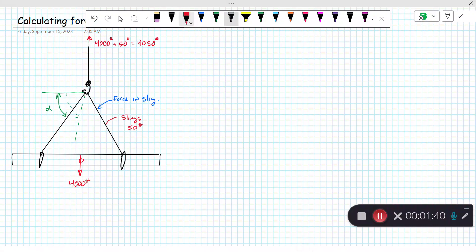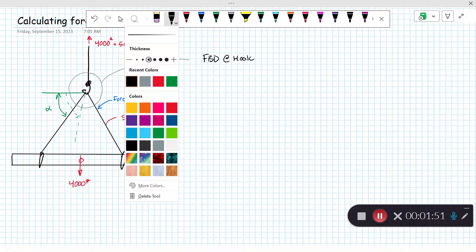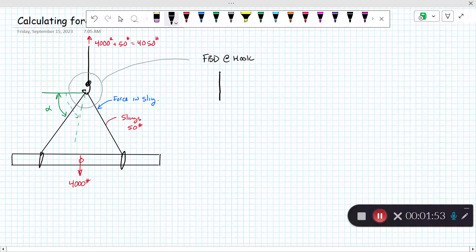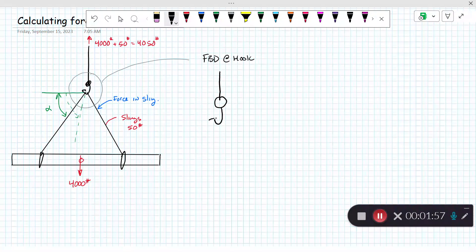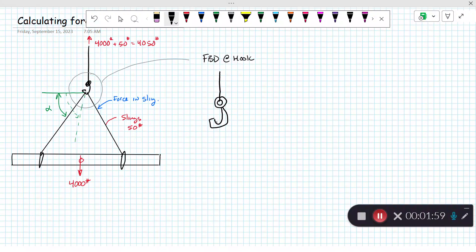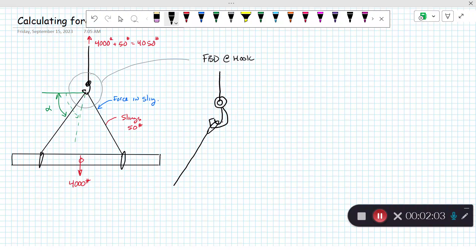Now our goal is to find the force in the sling, so let's do a free body diagram at the hook. Let me draw this a little bigger. We've got the cable coming down, our hook, and then we have our two slings wrapped around the hook coming out.